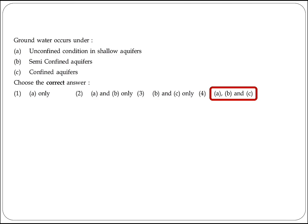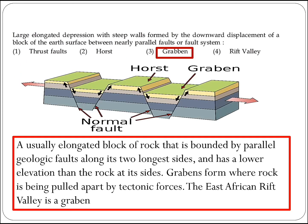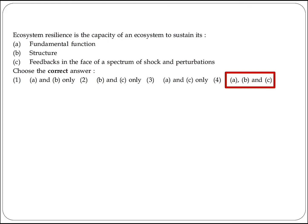The next question asks about the conditions under which groundwater occurs: under unconfined condition in shallow aquifer, semi-confined aquifer, and confined aquifer. Option 4 (A, B, and C) is the right answer. The next question defines a large elongated depression with steep walls formed by the downward displacement of a block of the earth's surface between nearly parallel faults or a fault system — this is known as a graben. Option 3 is the right answer.